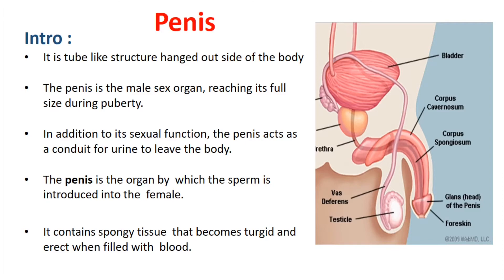In addition to its sexual function, the penis acts as a conduit for urine to leave the body. The penis is also the organ by which sperm is introduced into the female through the ejaculation of semen into the vagina. So, the two functions are: to conduit urine from the body to the outside, and to ejaculate sperm into the female.